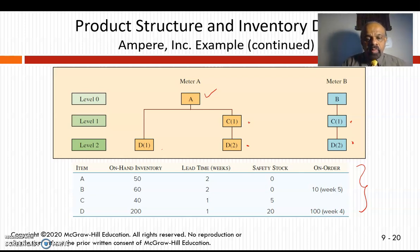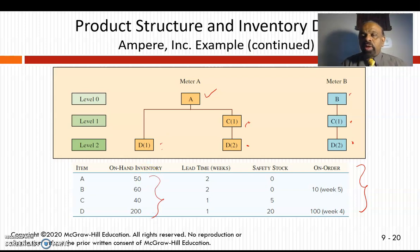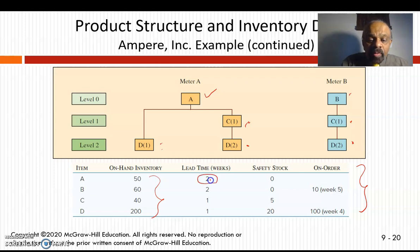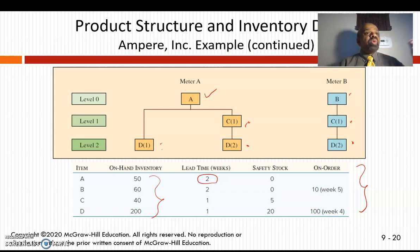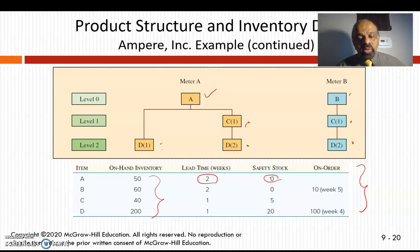For items A, B, C, and D, we have on-hand (beginning) inventory. For item A, we have 50 units on hand. The lead time for item A is two weeks, meaning if I want item A delivered today, I must have ordered it two weeks ago. Safety stock in this case is zero, and some orders have already been placed.